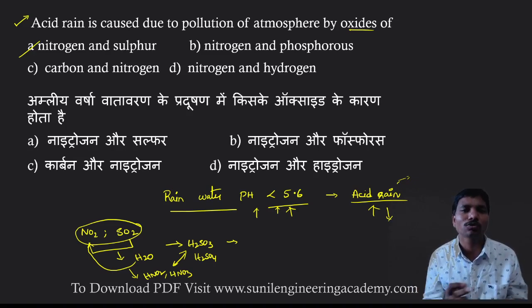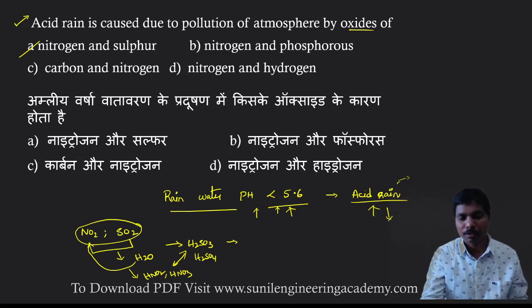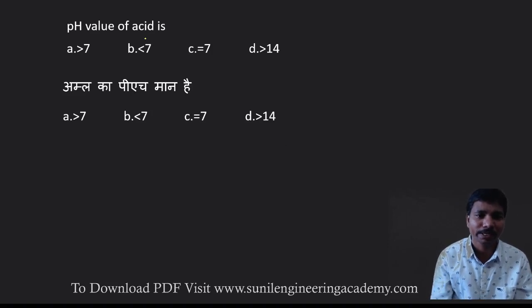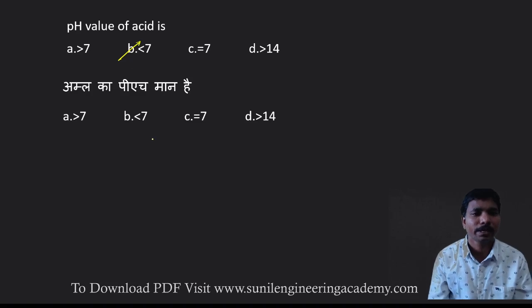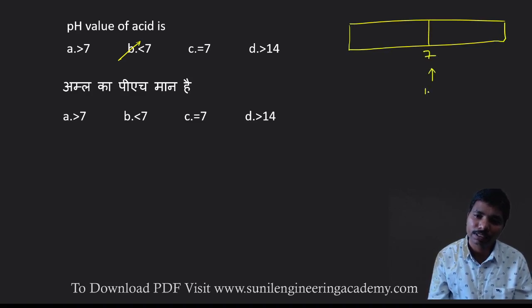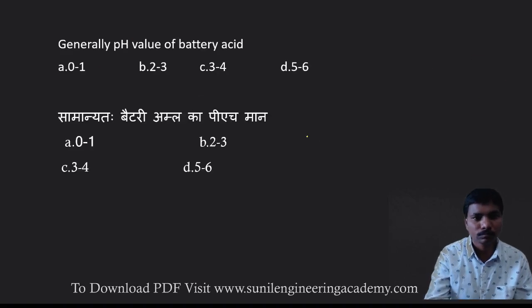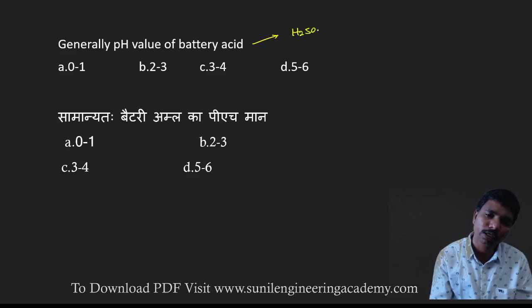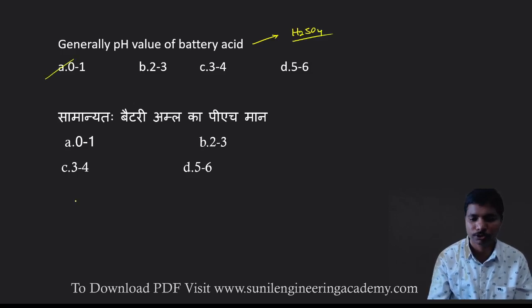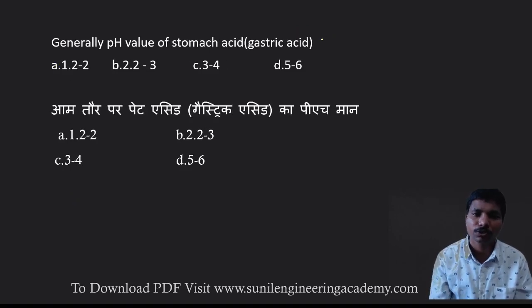Now coming to the next question: pH of acid is less than 7. In the pH scale, 0 to 7 are acids and 7 to 14 are bases — pH 7 is neutral. Generally, the pH of battery acid: the acid present in batteries is H₂SO₄, the king of all acids, with pH very nearly equal to 0 to 1. So the answer is option A.